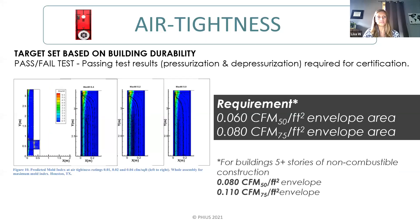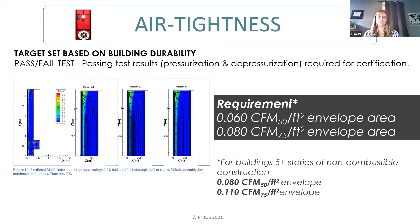Getting into air tightness: this target is set strictly based on building durability. There's a study done by our technical committee back in 2015 that established an allowable amount of air leakage to the building enclosure that was okay from a moisture and durability perspective. Of course there are energy savings with air tightness in almost all climates, but it's really set based on building durability. The requirement is 0.06 CFM50 per square foot of envelope area if you're measuring at 50 pascals, and 0.08 if you're measuring at 75 pascals. There's a slightly higher allowance for larger buildings. This has to be tested, and it's a pass/fail — you test pressurization and depressurization, take the average, and it must meet this requirement.